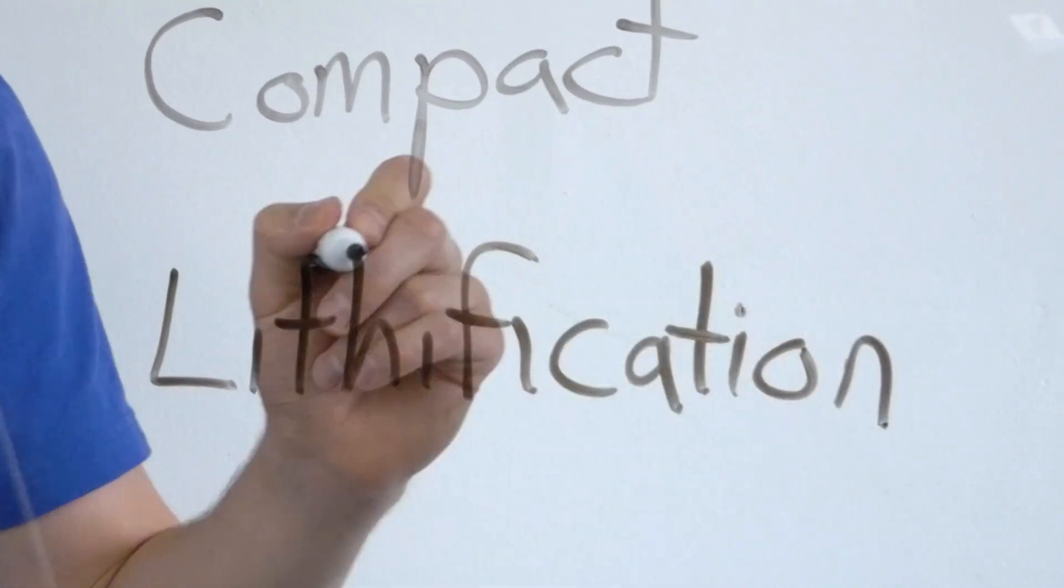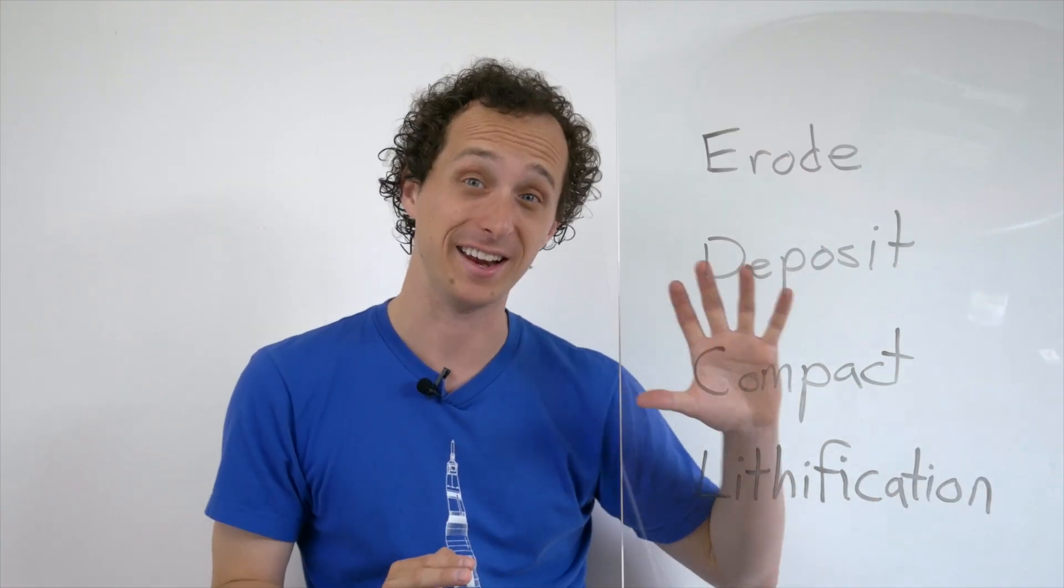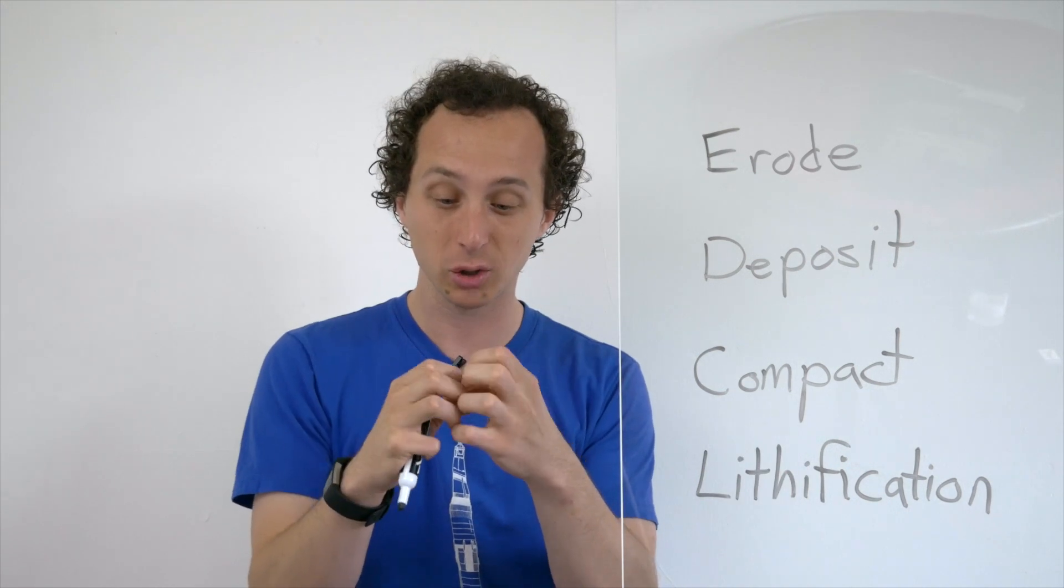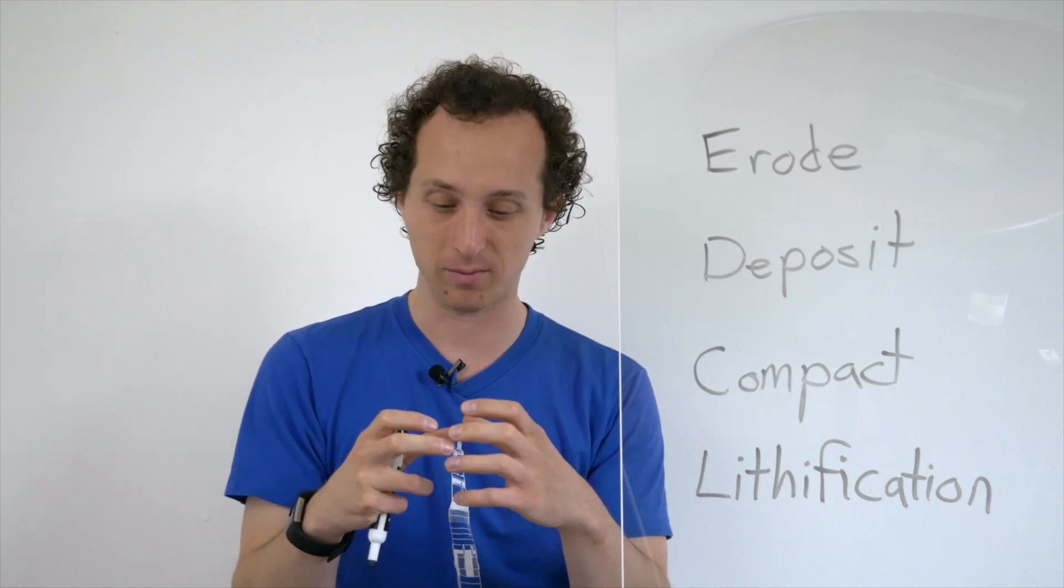And that is the last step: lithification. Lithification is a crazy word, and it is a crazy process. It's when you have two rocks that are close together, they're compacted together, and a chemical bond forms between them that allows for them to become one solid mass, one new sedimentary rock.